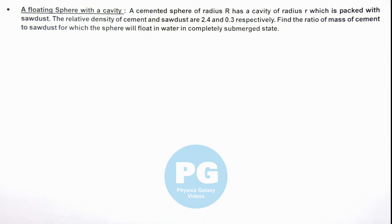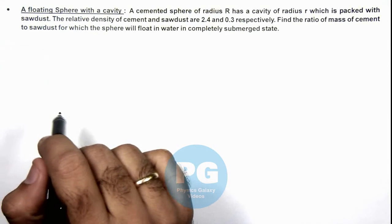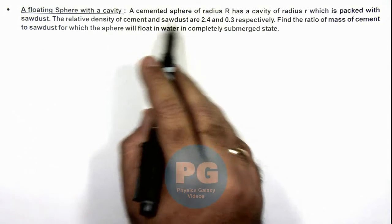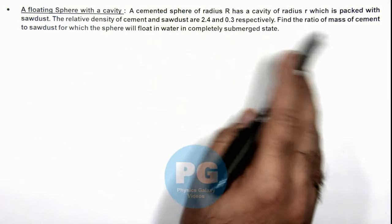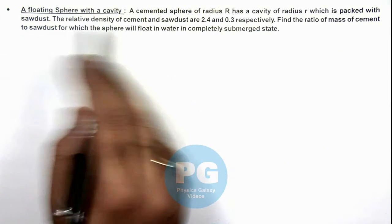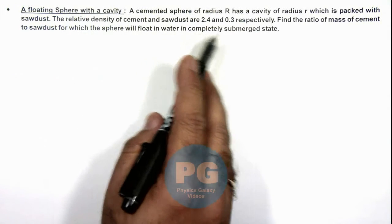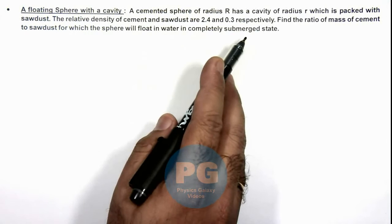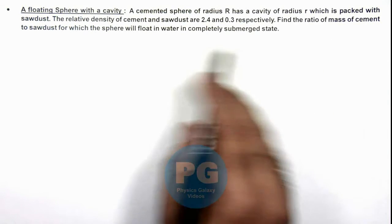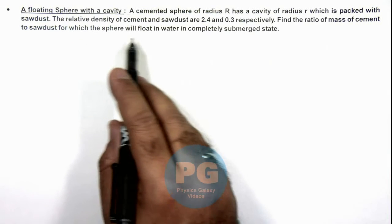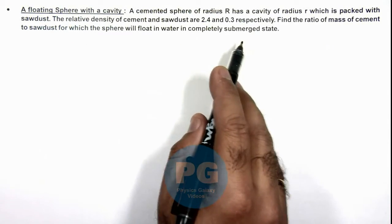In this illustration, we'll analyze a floating sphere with a cavity. We are given that a cemented sphere of radius R has a cavity of radius small r, which is packed with sawdust, and the relative density of cement and sawdust are 2.4 and 0.3 respectively. We are required to find the ratio of mass of cement to the mass of sawdust for which the sphere will float in water in completely submerged state.